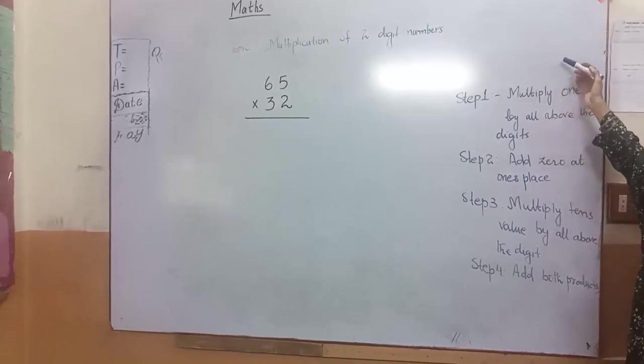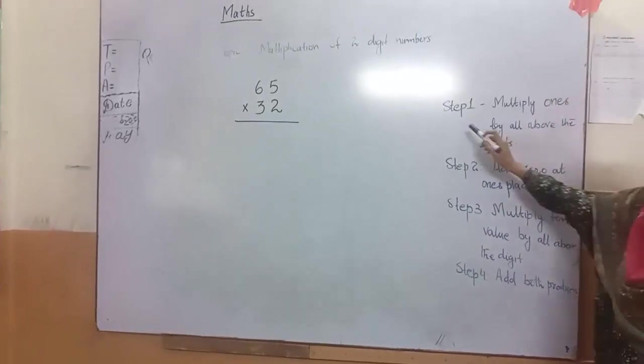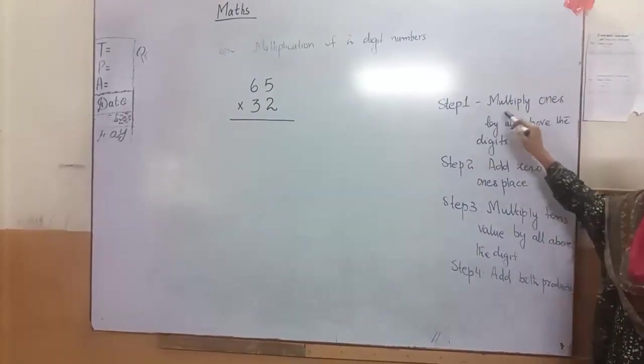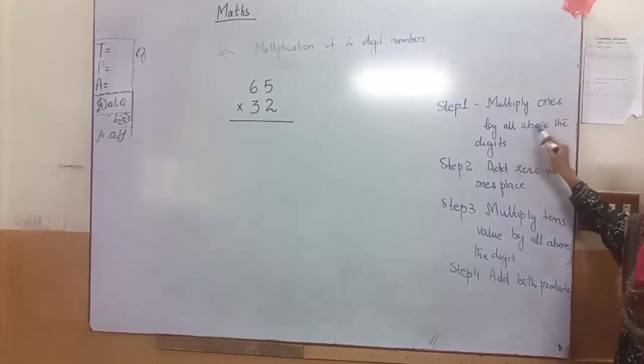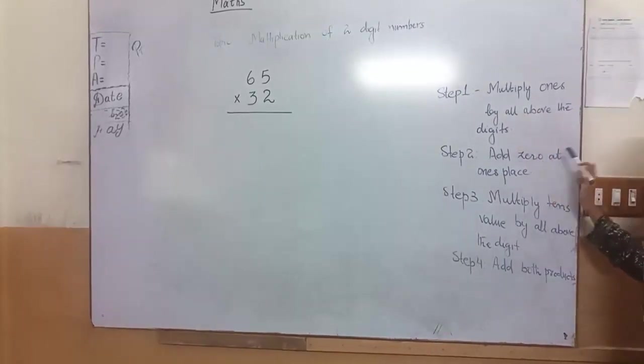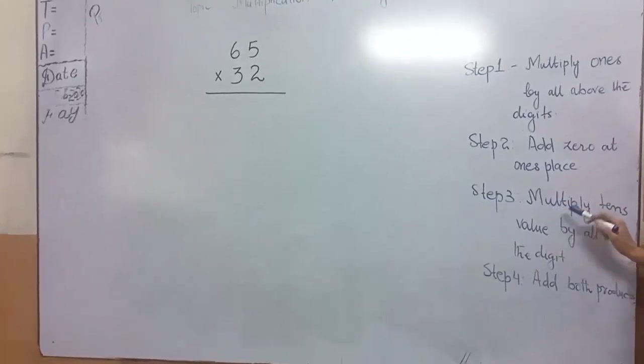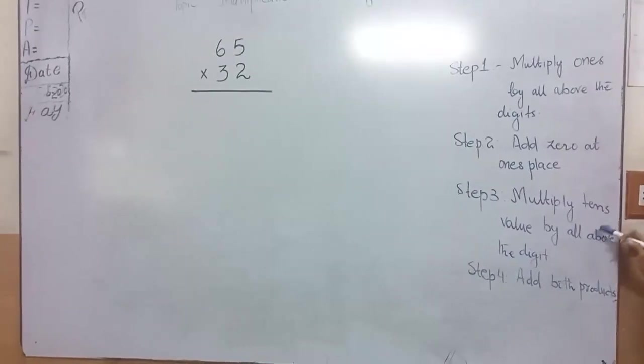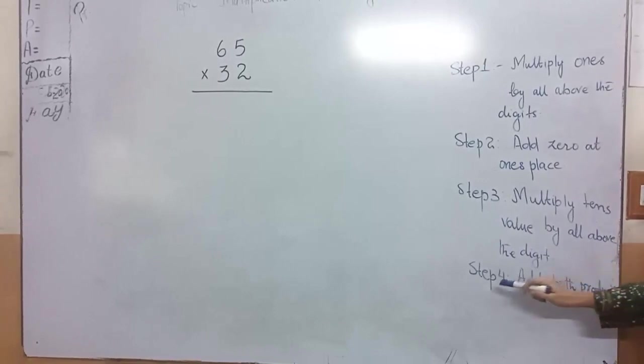Following steps we are using: Step 1, multiply ones by all above the digits. Step 2, add zero, add one square. Step 3, multiply tens value by all above the digits. Step 4, add both products.